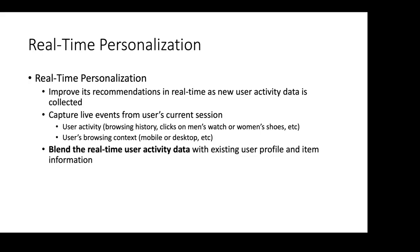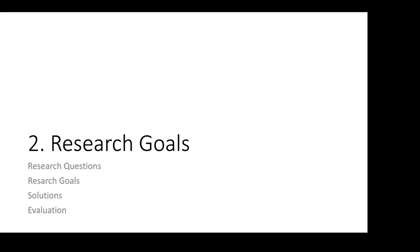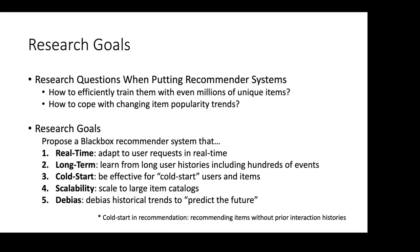Real-time personalization in a recommendation system improves recommendations in real-time by leveraging captured live event feeds from users, such as click histories, browsing histories, or device information — whether the user is on mobile or desktop. This data is blended with existing data to improve predictions.